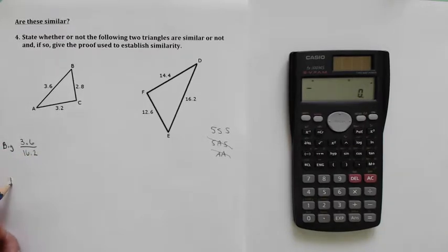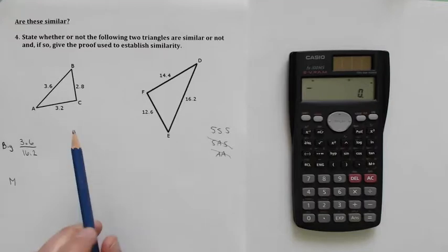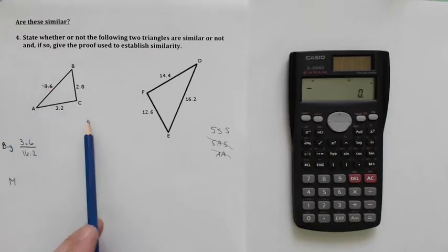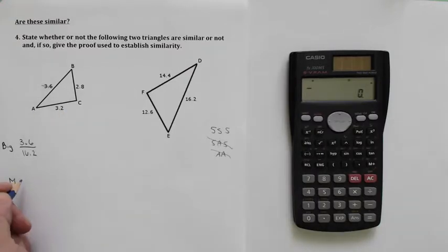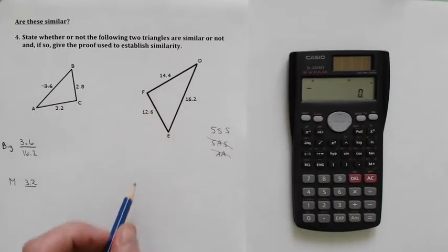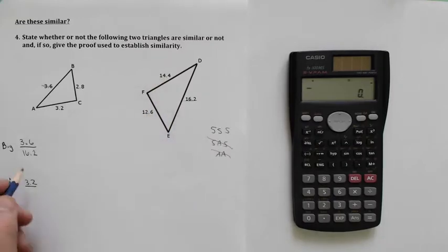And then I'm going to take a look at the middle. And the middle one, the 3.6 is gone, the middle one here is going to be the 3.2. And the 16.2 got used up before. Now the middle one is going to be the 14.4.